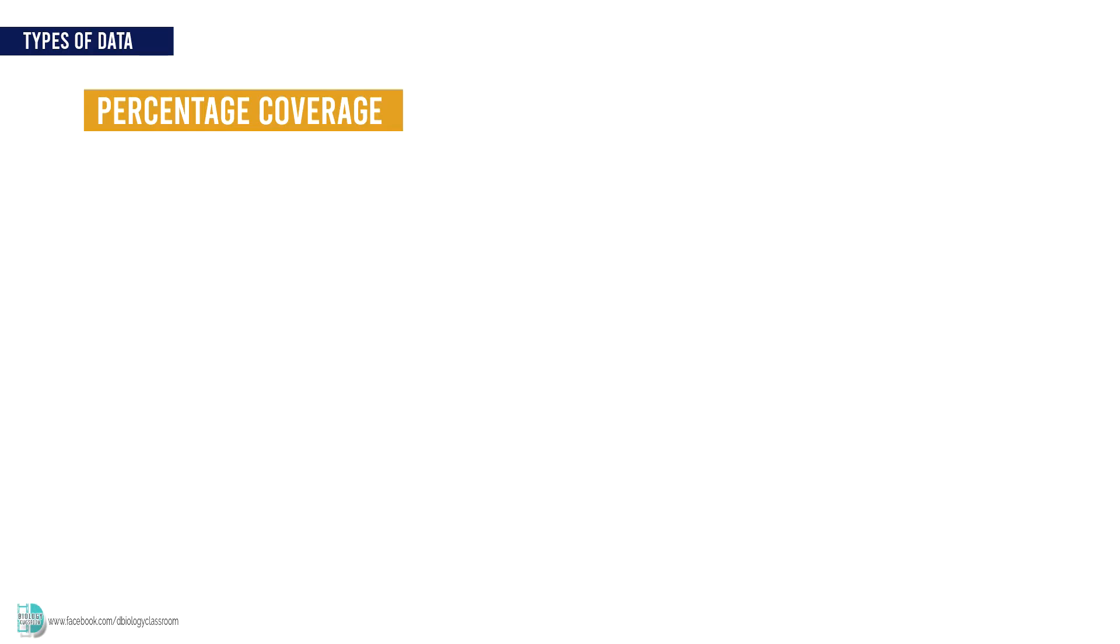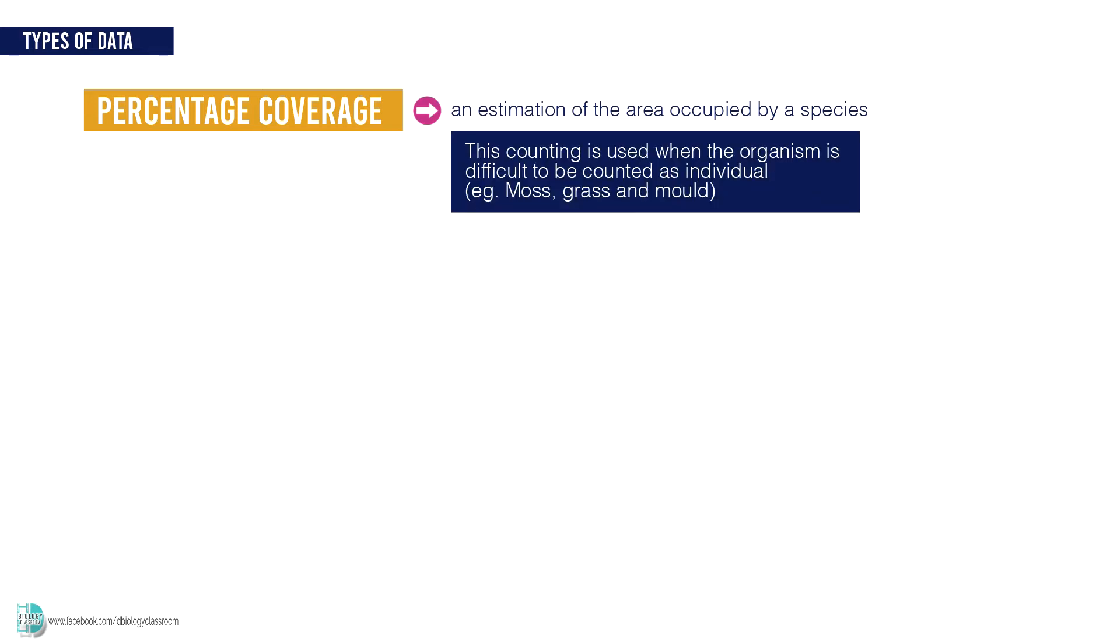The second one is percentage coverage. It is an estimation of the area occupied by a species. This counting is usually used when the organism is difficult to be counted as individual. For example, moss, grass, and mold.